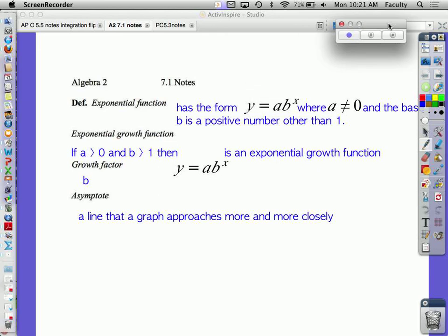All right, here we go. 7.1. An exponential function has the form y equals a times b to the x, where a is not equal to 0, and the base b is a positive number other than 1.